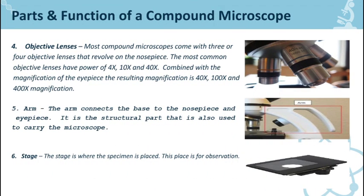Number four is the objective lenses. Most compound microscopes come with three or four objective lenses that revolve on the nose piece. The most common objective lenses have power of 4 times, 10 times, and 40 times. Combined with the magnification of the eyepiece, the resulting magnification is 40 times, 100 times, and 400 times. The objective lenses help us to zoom in or to magnify the object or the small organism.